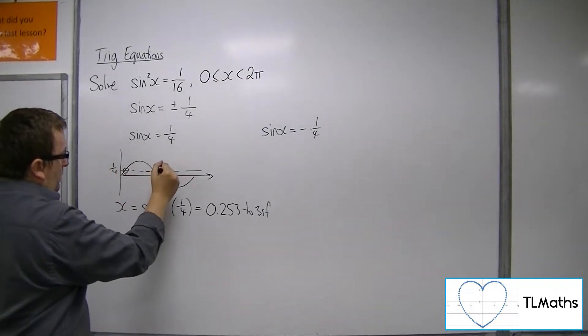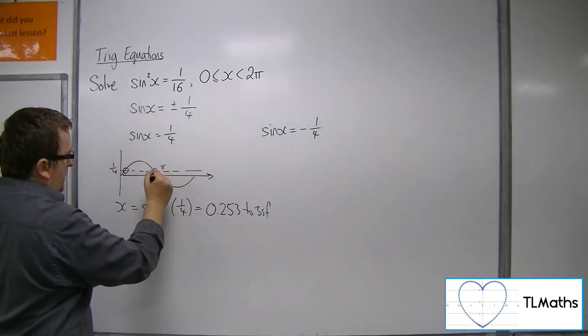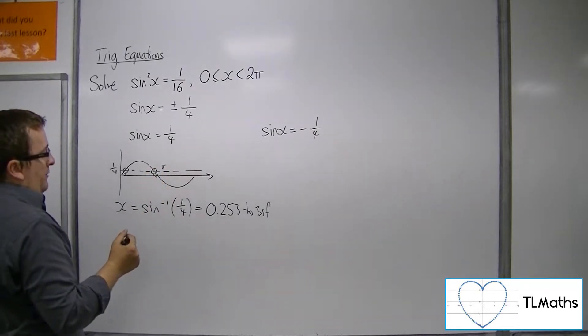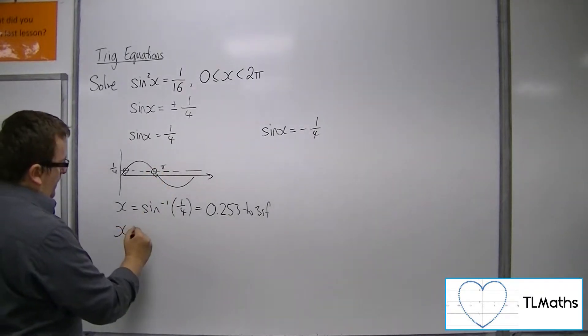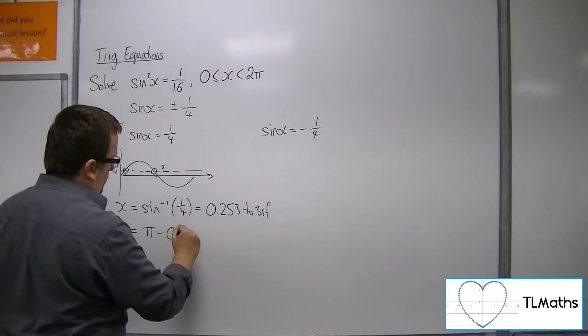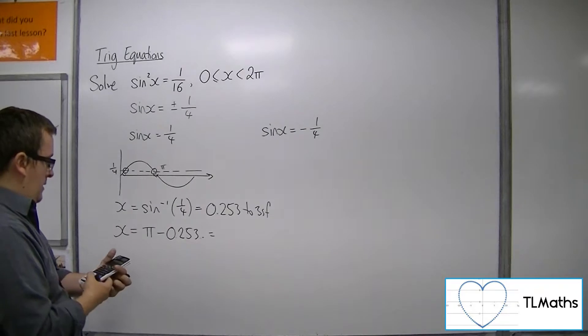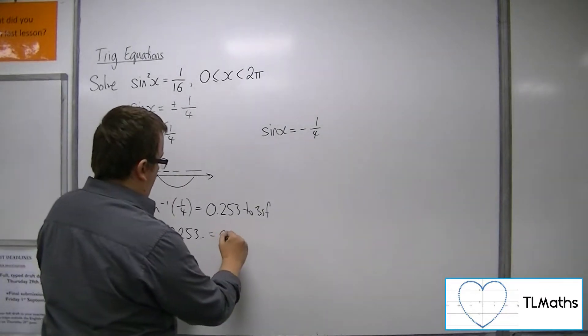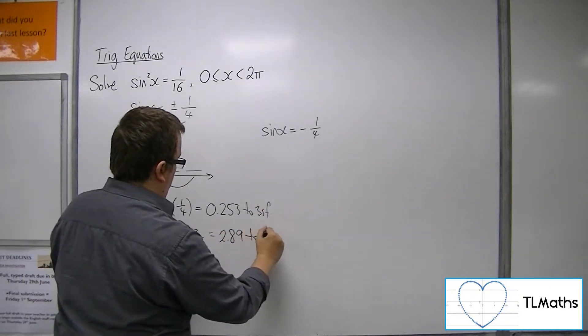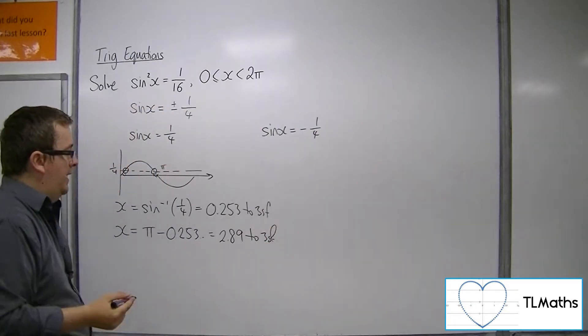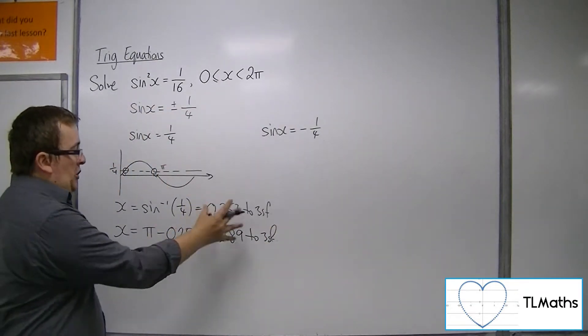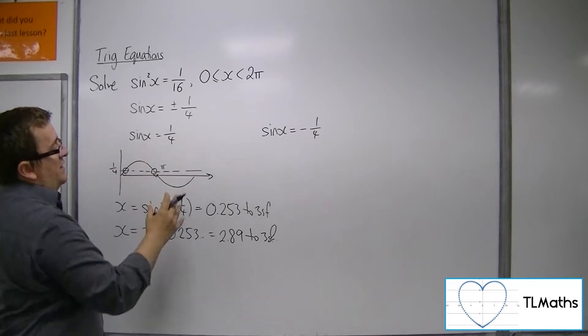Here, so that's π, so it must be 0.253 away from π. So π take away 0.253 is 2.89 to 3 significant figures. So they are the two solutions that I need between 0 and 2π.